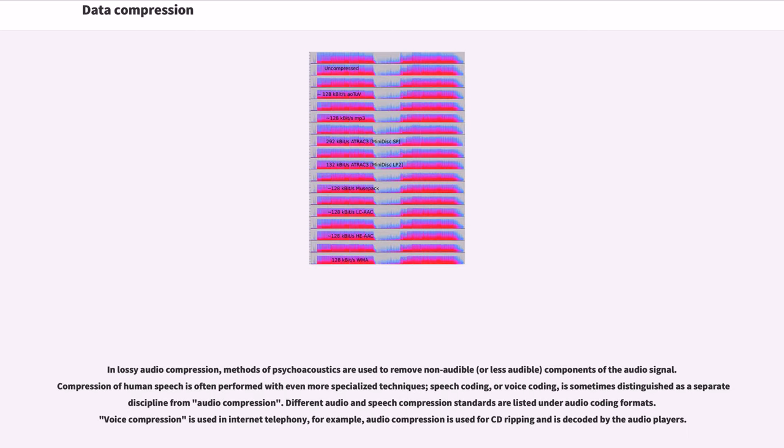In lossy audio compression, methods of psychoacoustics are used to remove non-audible, or less audible, components of the audio signal. Compression of human speech is often performed with even more specialized techniques. Speech coding, or voice coding, is sometimes distinguished as a separated discipline from audio compression. Different audio and speech compression standards are listed under audio coding formats.